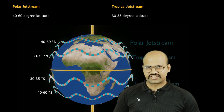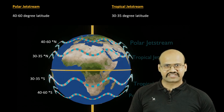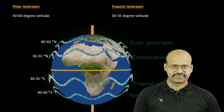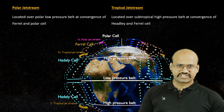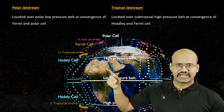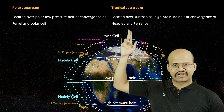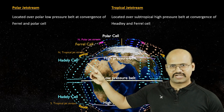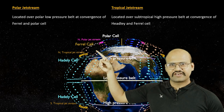The polar jet stream is located between 40 to 60 degrees north, while the tropical jet stream is located between 30 to 35 degrees latitude. The polar jet streams are located over polar low pressure belts and are found at the convergence of the Ferrel cell and polar cell, while the tropical jet streams are located over the high pressure belt and are found at the convergence of the Hadley cell and Ferrel cell.